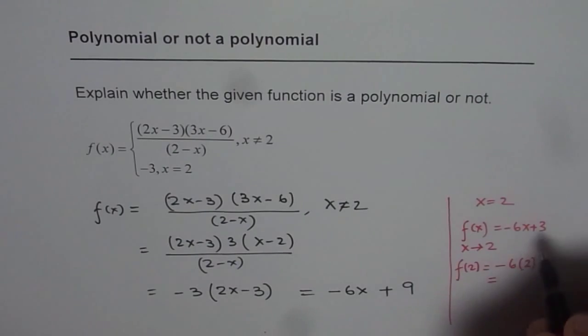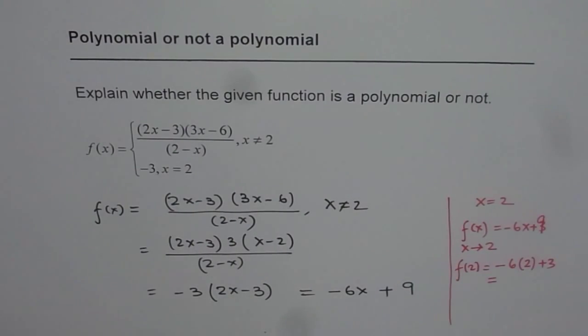Then f of 2 we can write this as equal to minus 6 times 2 plus 3 which is - oh sorry this is plus 9. Let me correct this. This is 9. This is minus 6x plus 9. So we get minus 12 plus 9 which is indeed equals to minus 3. So it approaches minus 3.